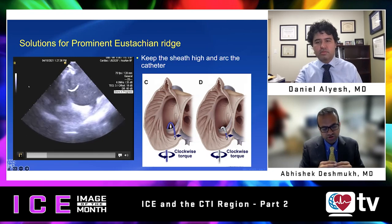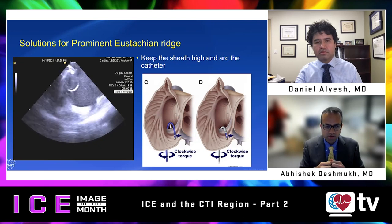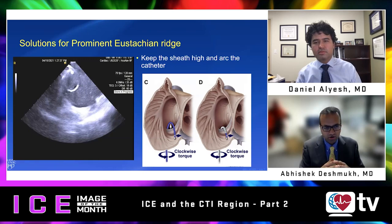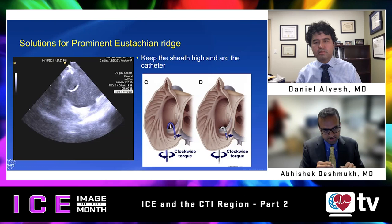A second issue is that the eustachian ridge can also have some tissue which can conduct electricity and be an impediment for creating a bidirectional block across the cavotricuspid isthmus. Intracardiac echo helps a lot to circumvent this and make sure that we are ablating in the area adjacent to the ridge and even on the ridge so that we can get a block.